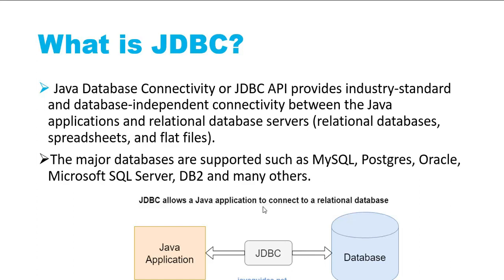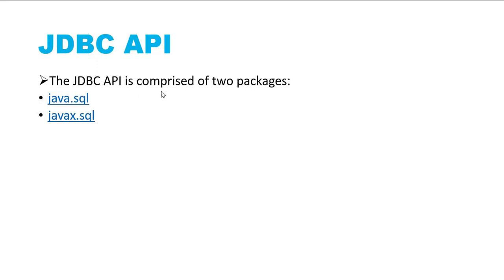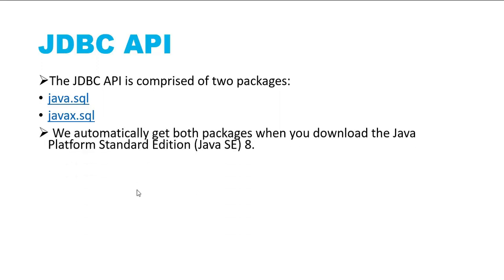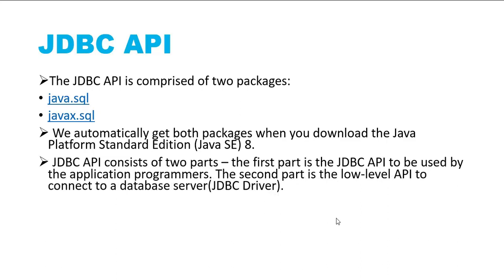The JDBC API is comprised of two packages: java.sql and javax.sql. We automatically get both packages when we download Java from the official website. The JDBC API consists of two parts. The first is java.sql, which we use for processing and accessing data stored in a data source using Java. The second part is the JDBC driver — a set of Java classes that implement the JDBC interfaces targeting a specific database. The interfaces come with standard Java, but the implementation is specific to the database you need to connect to; such an implementation is called a JDBC driver.